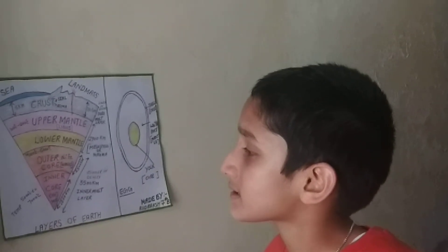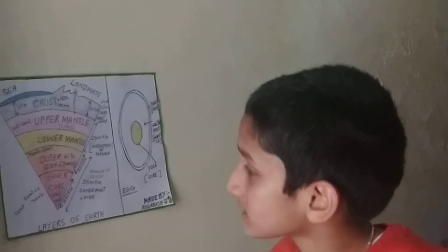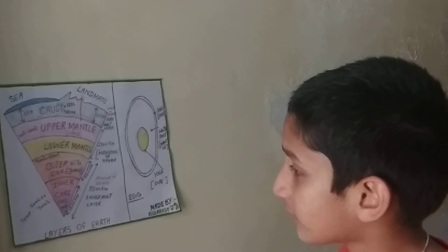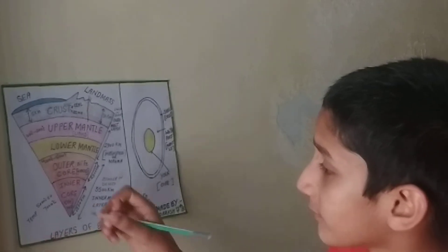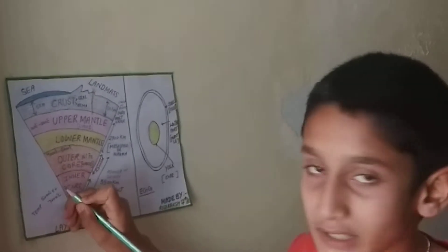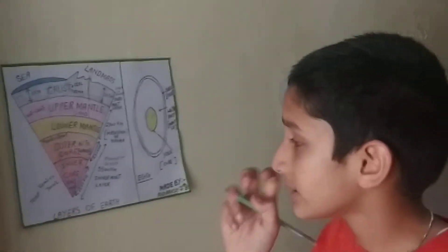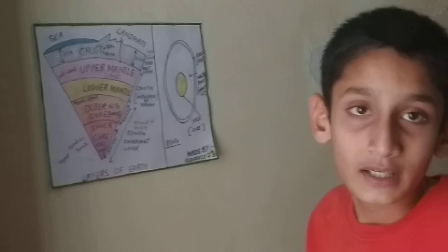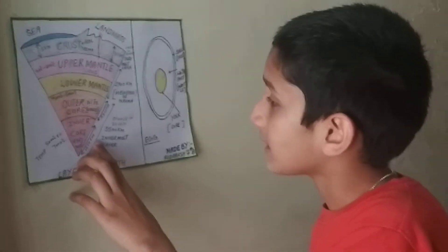The second part of the core is the inner core. It is mostly made up of ferrous or iron and is solid in form. The temperature of the inner core is 5000 to 7000 degrees Celsius, and the thickness of the inner core is 1200 km.